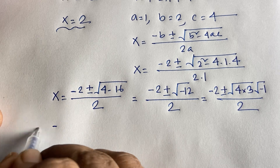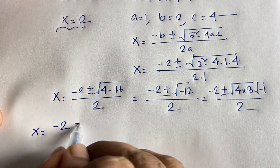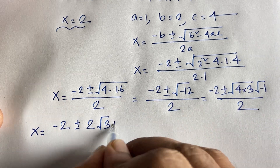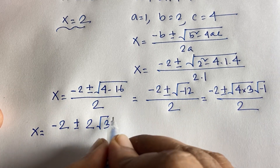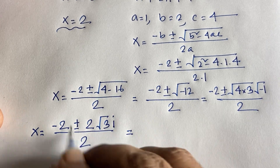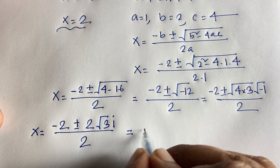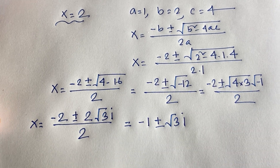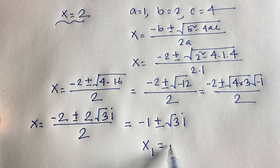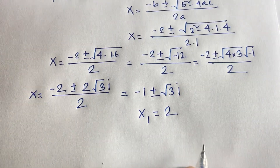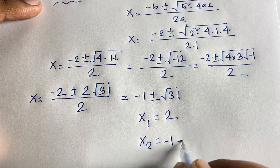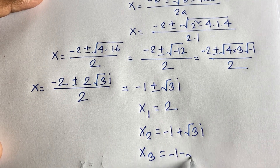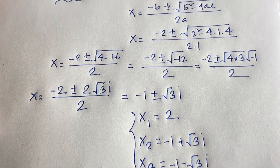Then x equals minus 2 plus or minus the square root of 4 times 3 times the square root of minus 1, all over 2. The square root of 4 is 2, and the square root of minus 1 is i. Dividing both terms by 2, we get minus 1 plus or minus square root of 3 times i. So our final answers are: x₁ equals 2, x₂ equals minus 1 plus √3·i, and x₃ equals minus 1 minus √3·i.